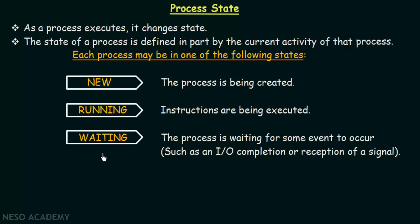There is another state known as the waiting state. The process is waiting for some event to occur, such as an input/output completion or reception of a signal. So we say that a process is in the waiting state when it is waiting for some event to occur. Examples include IO completion — some IO operation that needs to be completed — or when the process is waiting for a signal to be received.